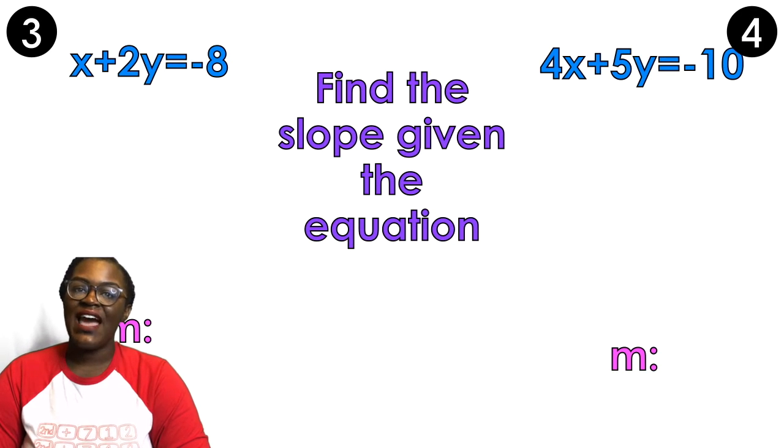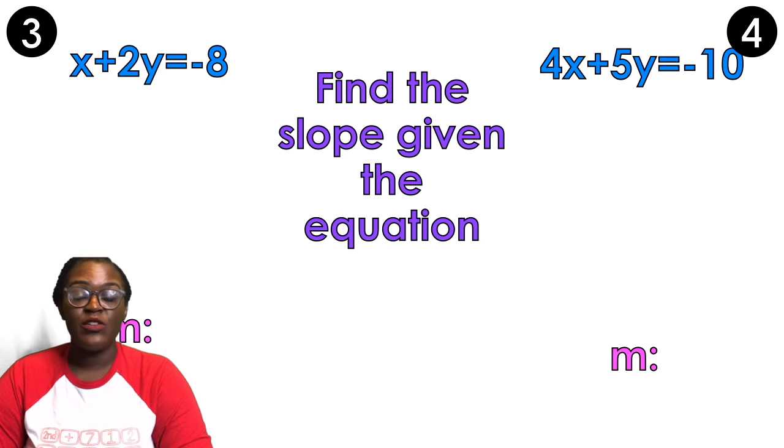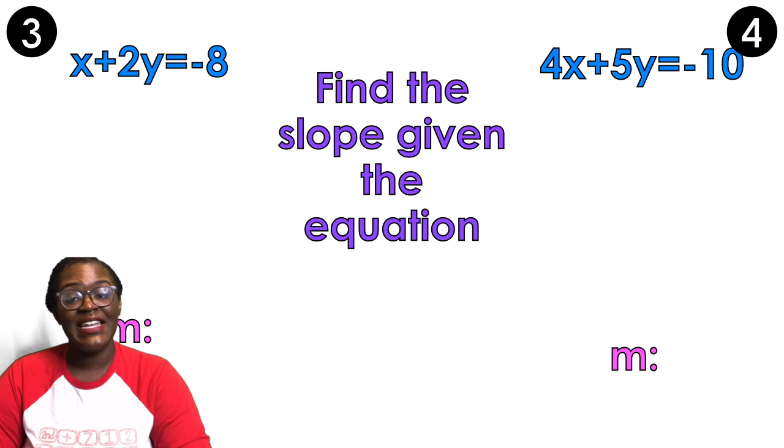Okay, so let's say I have example 3. Example 3 says X plus 2Y equals negative 8. So this equation is actually in standard form. So before I can decide what the slope is, I need to get it to be in slope-intercept form.